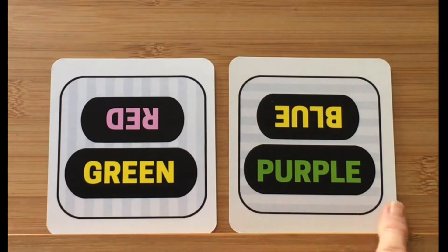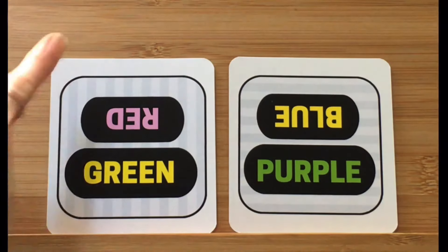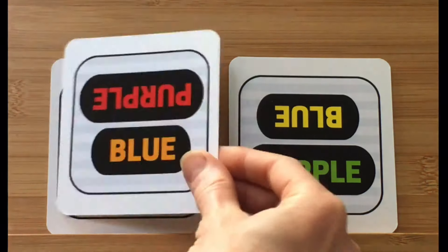Now, when the lines are going across, and I'll always use my finger in this demonstration just to show the direction of the lines, when the lines are going horizontally or from left to right, you want to focus on what the word says, and the word says purple.